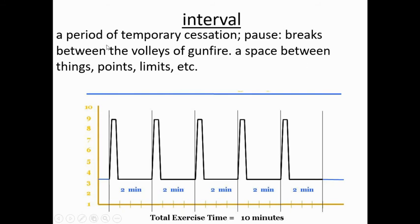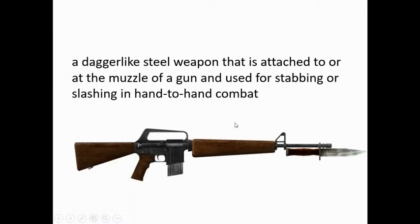A period of temporary cessation, pause, breaks between the volleys of gunfire; a space between things, points, limits, etc. So two minutes rest, and then somebody was exercising really hard — two minutes of rest, then exercising. Bayonet: a dagger-like steel weapon that is attached to or at the muzzle of a gun and used for stabbing or slashing in hand-to-hand combat.